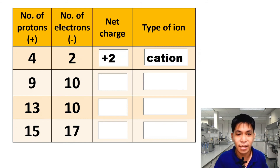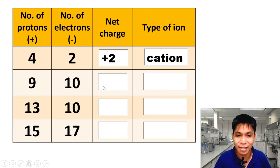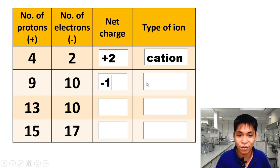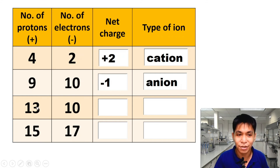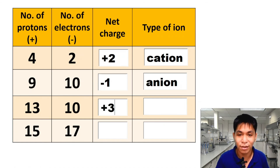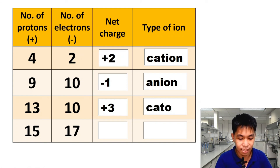Next: 9 protons and 10 electrons. Electrons are greater by 1, so the net charge is negative 1, and the type of ion is an anion. Next: 13 protons and 10 electrons. Protons are greater by 3, so the net charge is positive 3 — a cation.